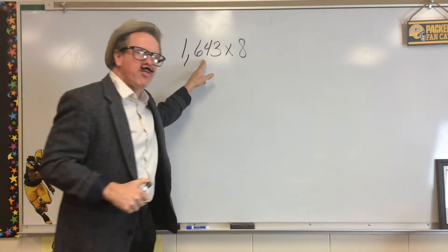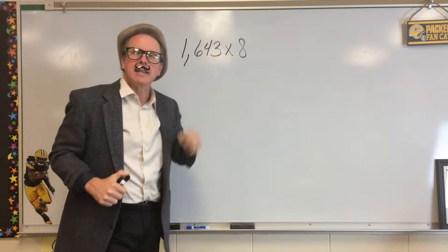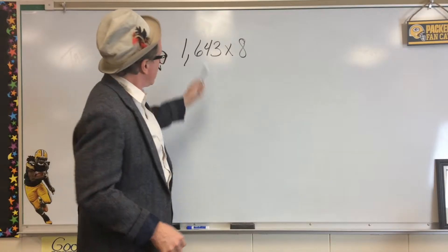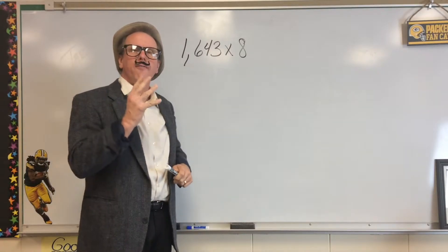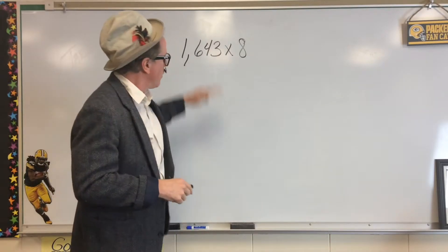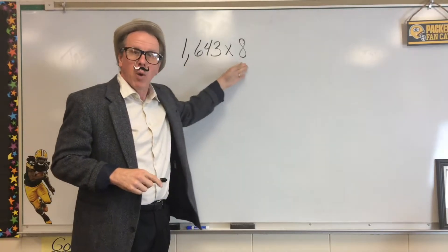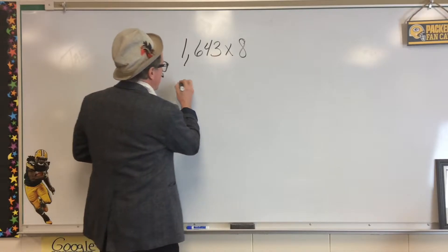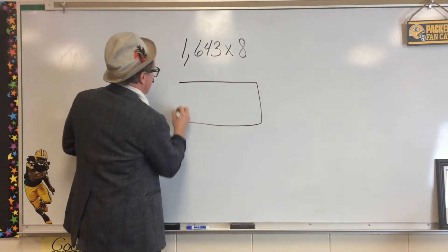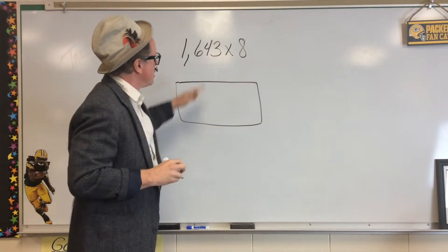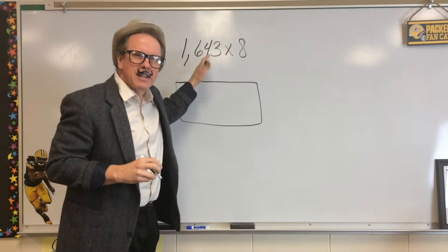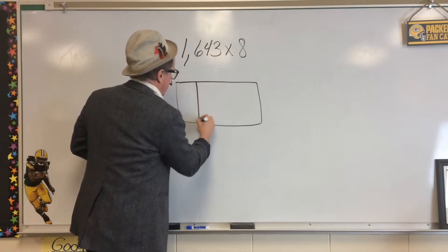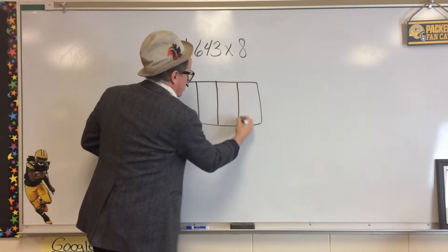As you can see, 1,643 times 8. Now, that is quite a bit bigger than the other one. I will call this a 4 by 1 — we have a 4-digit number by a 1-digit number. Let's see if we can set that up. I will make my rectangle box, and now I have to divide that into 4 sections because there are 4 digits.